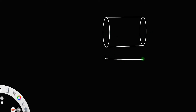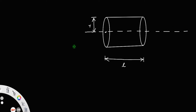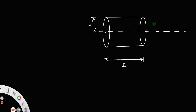Let us consider a cylindrical pipe of length L and radius R. Let this be the axis of the cylinder, and let us consider a liquid flowing through this pipe such that the flow of the liquid is horizontal or parallel to the axis.